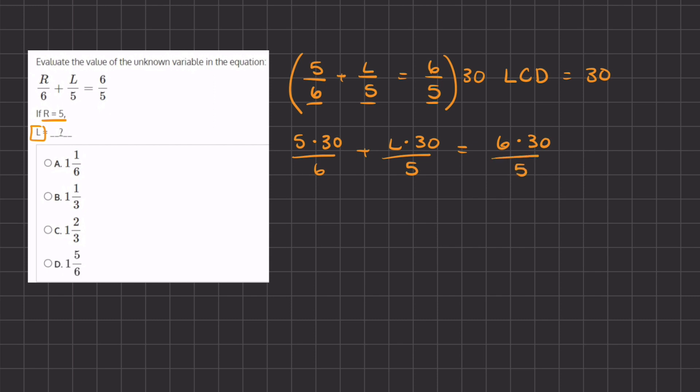Now let's start simplifying. We can simplify this 6 and 30 and turn it into a 5 in the numerator. So we have 5 times 5, which gives us 25, plus l times 30 divided by 5. We can simplify this 5 and 30, and 5 goes into 30 6 times.